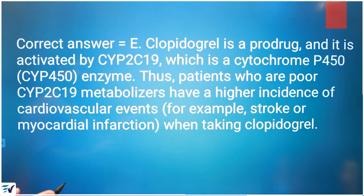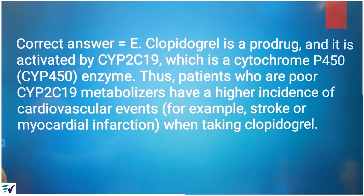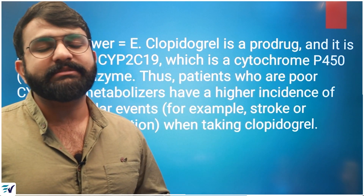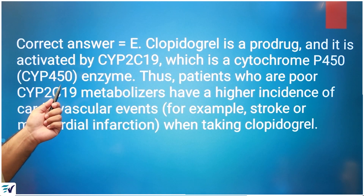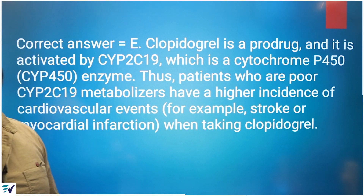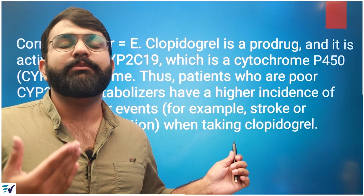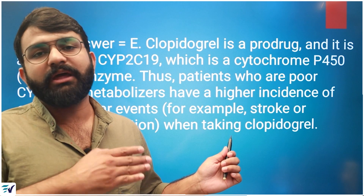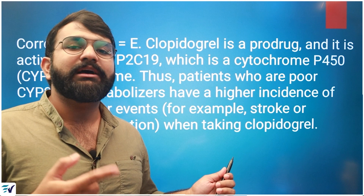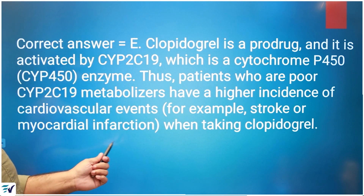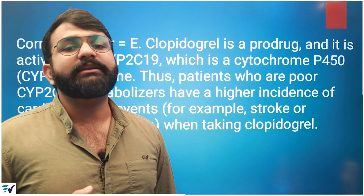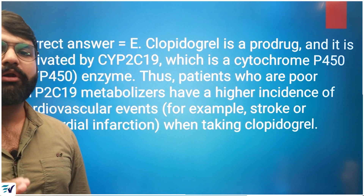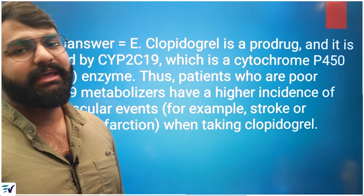Clopidogrel is a prodrug activated by CYP-2C19, a cytochrome P450 isoenzyme. A poor CYP-2C19 metabolizer has a higher incidence of cardiovascular events — including stroke or myocardial infarction — because the drug is not converted to its active form. This is why the patient had a recurrent ischemic stroke. An alternative such as aspirin or another antiplatelet medication should be considered.